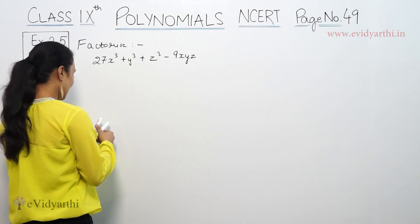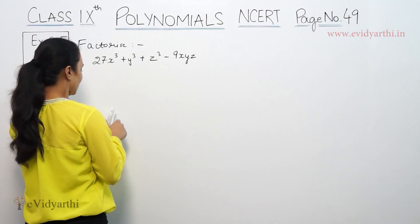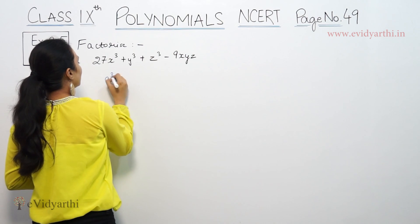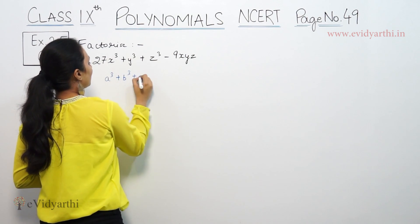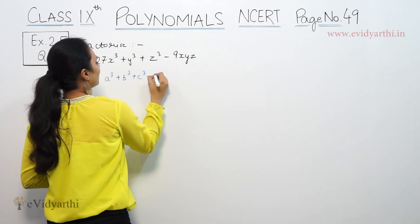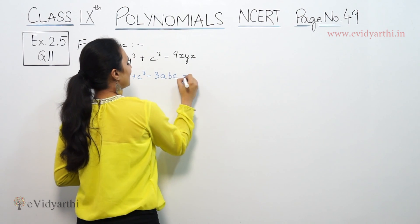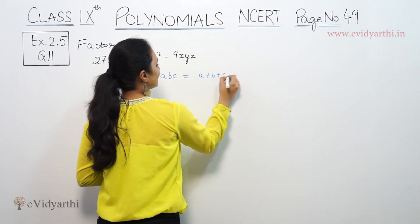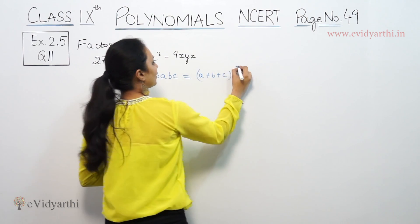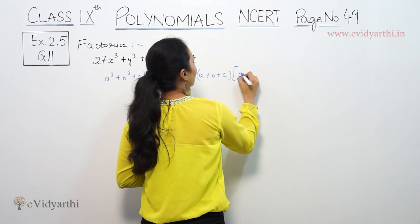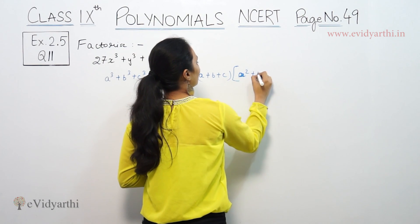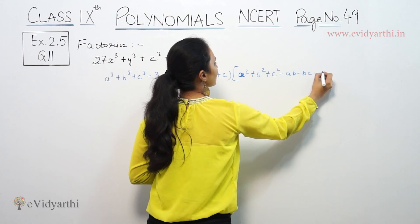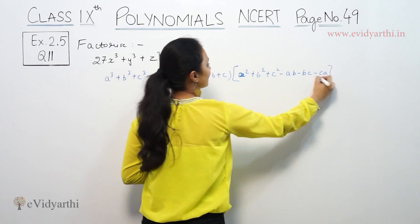For this we will use the identity: a cube plus b cube plus c cube minus 3abc is equal to a plus b plus c, into a squared plus b squared plus c squared minus ab minus bc minus ca.